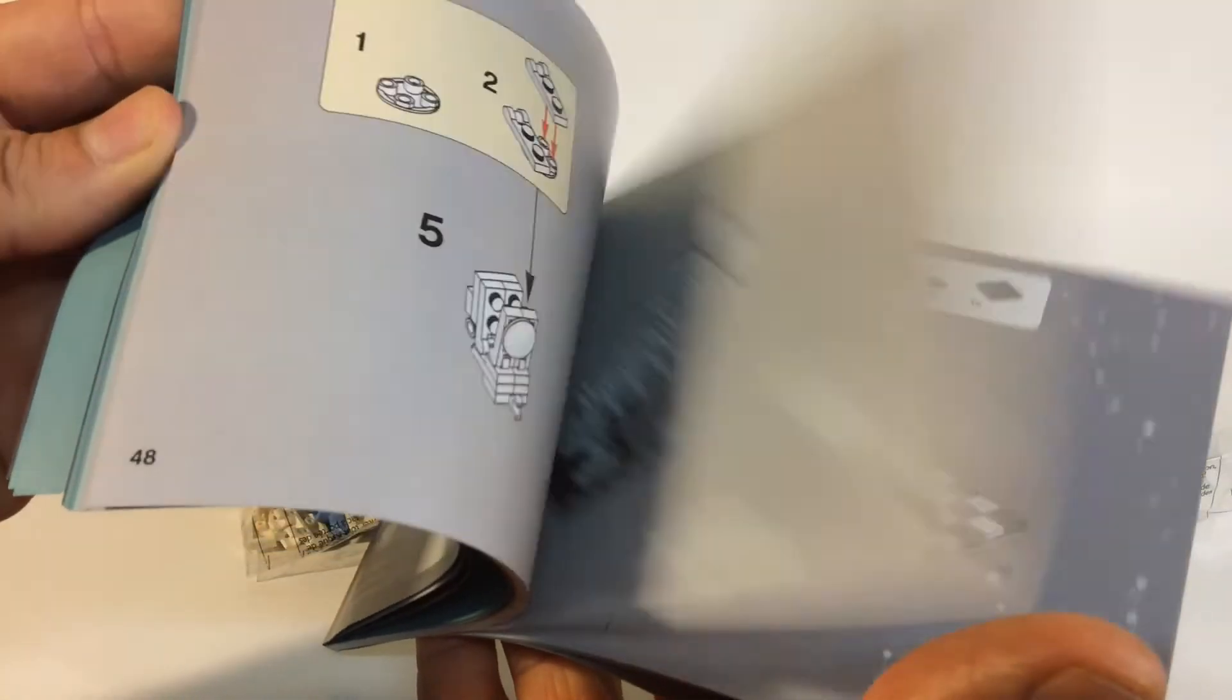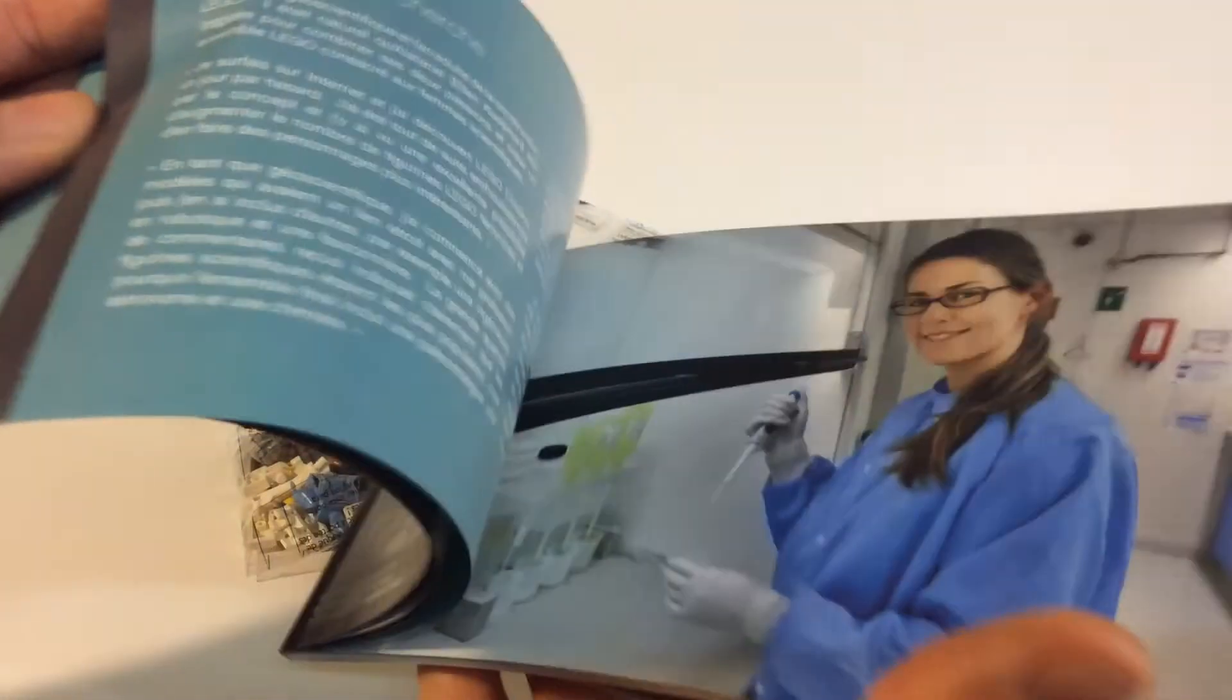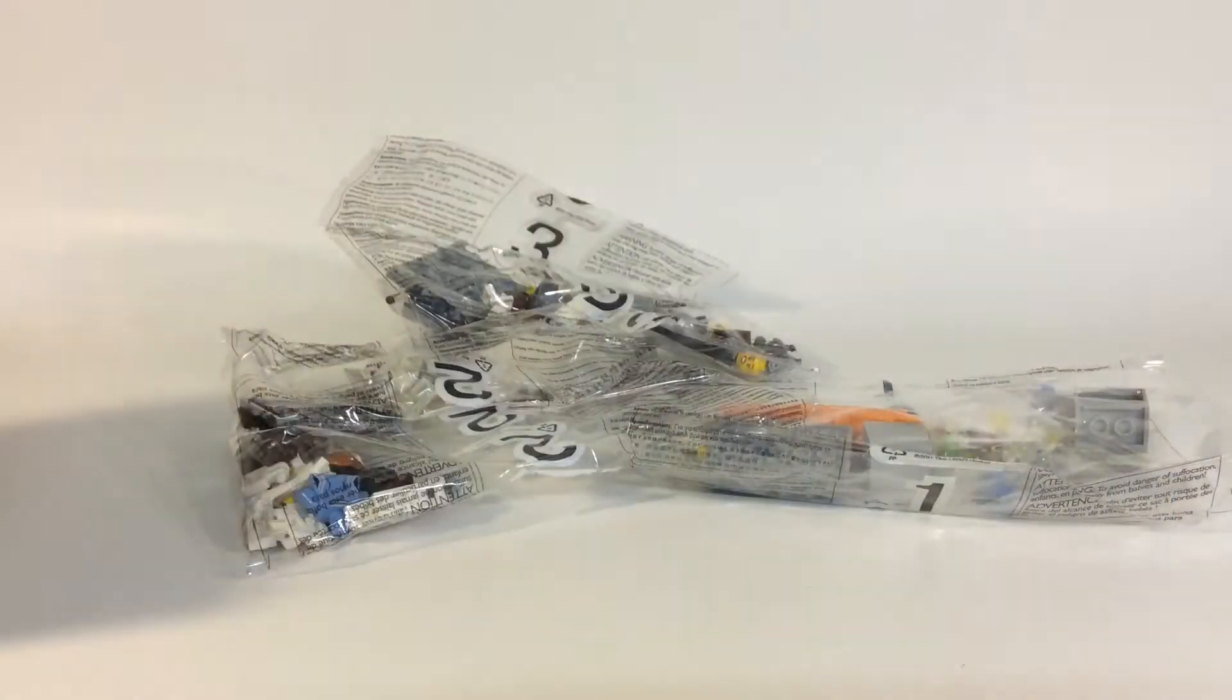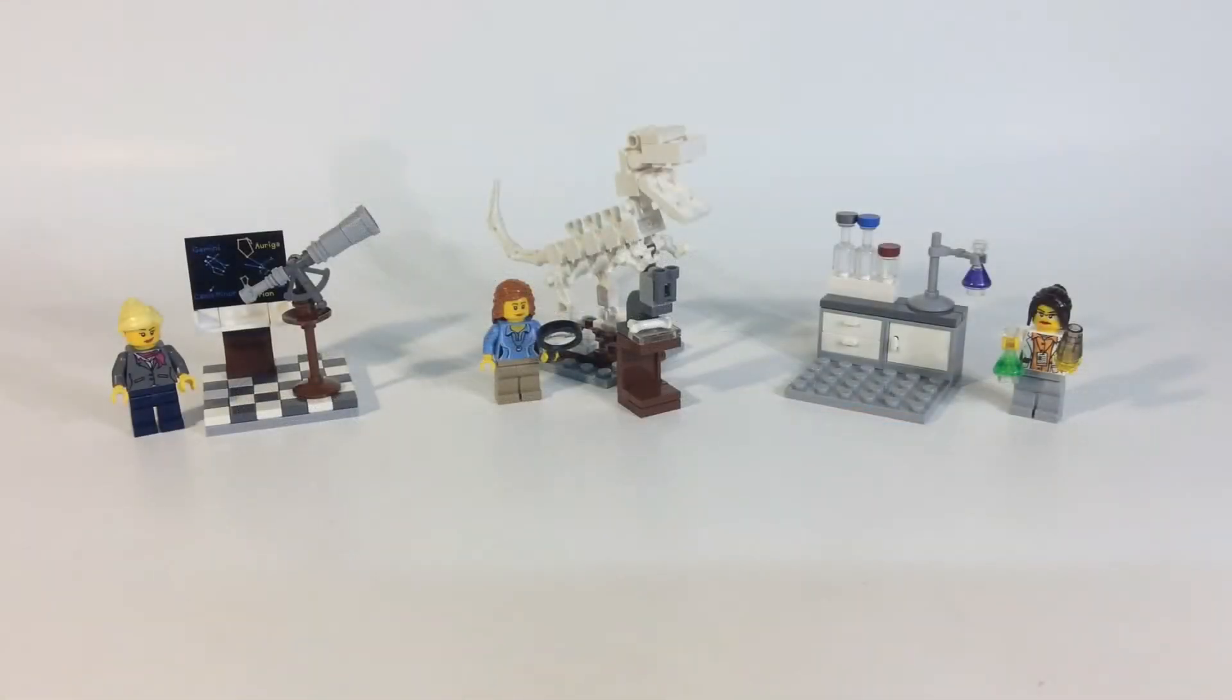But then we have the instructions on how to build each one of these. So I'll get right to it. So here's a look at all three of our female scientists, different professions. We have the astronomer, the paleontologist, and I guess the chemist.